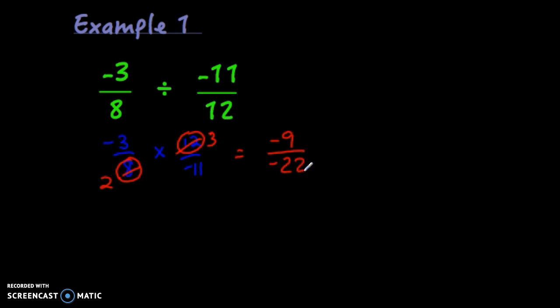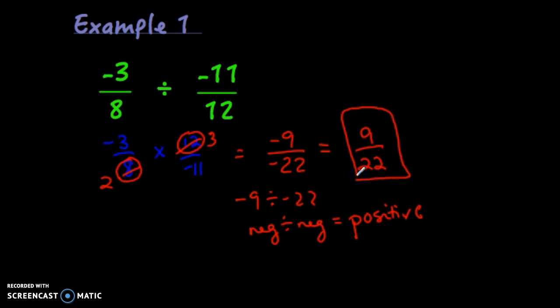Notice, this is really important. This means negative 9 over negative 22 means negative 9 divided by negative 22. It's a negative divided by a negative. When we multiply and divide integers, that answer is going to be a positive. So we never leave it in the form negative over negative. We would change this to 9 over 22. That's reduced, so it's my final answer.